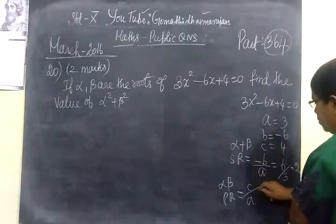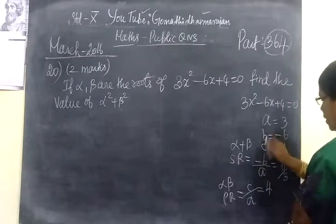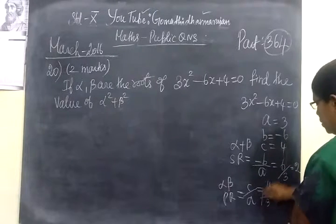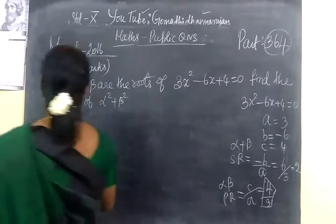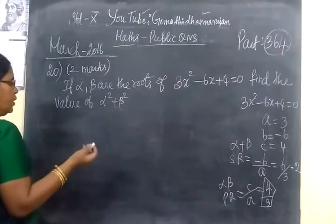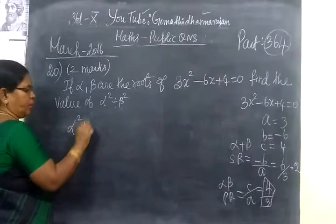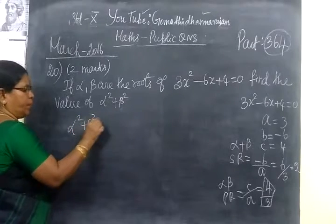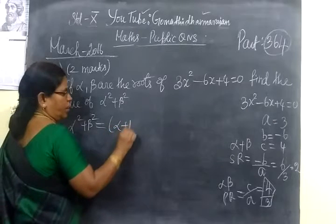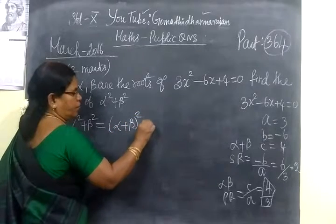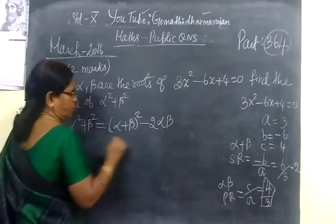Then, product of the roots — that means PR equal to C by A. Alpha plus beta equals 2. We know sum of the root and product of the root. The question is, we have to find the value of alpha square plus beta square. This is nothing but alpha plus beta whole square minus 2 alpha beta.